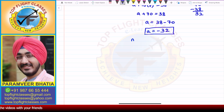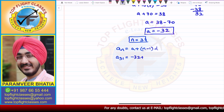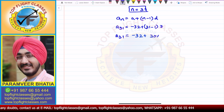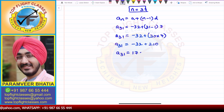Now A is minus 32, D is 7, and N is 31 because we need the 31st term. Writing the nth term formula: A31 equals A plus (N minus 1) times D, which is minus 32 plus (31 minus 1) times 7, that is minus 32 plus 30 times 7, giving minus 32 plus 210. So A31 equals 178.